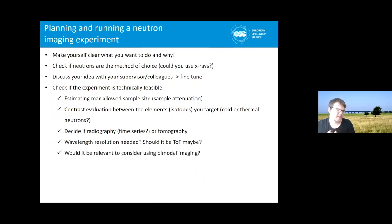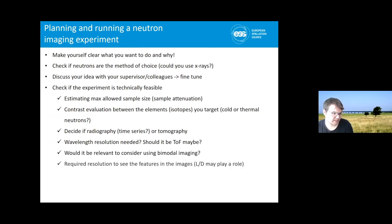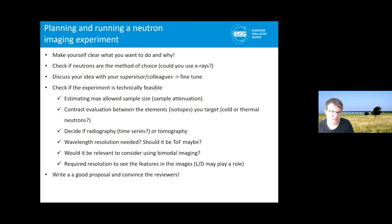Also consider: would you benefit from bimodal neutron and X-ray imaging? Then pick a beamline that offers this. What is the spatial resolution you really require? Look at the L over D ratios. And finally, write a good proposal and convince the reviewers that they should give you beam time — that's part of the exercise now.